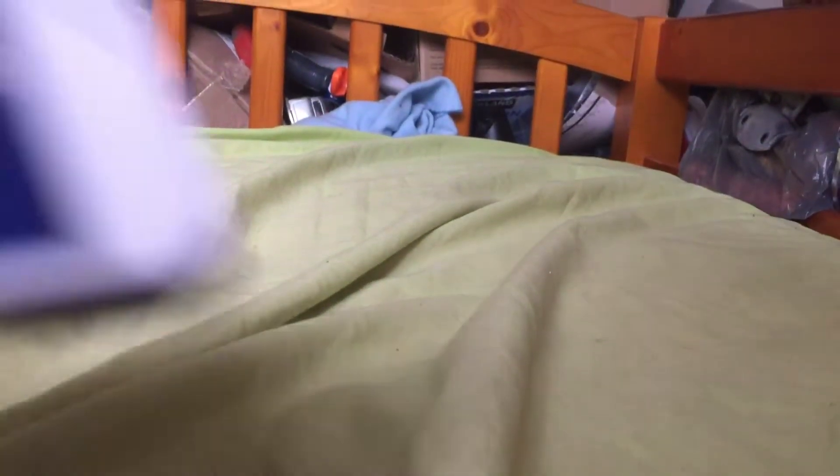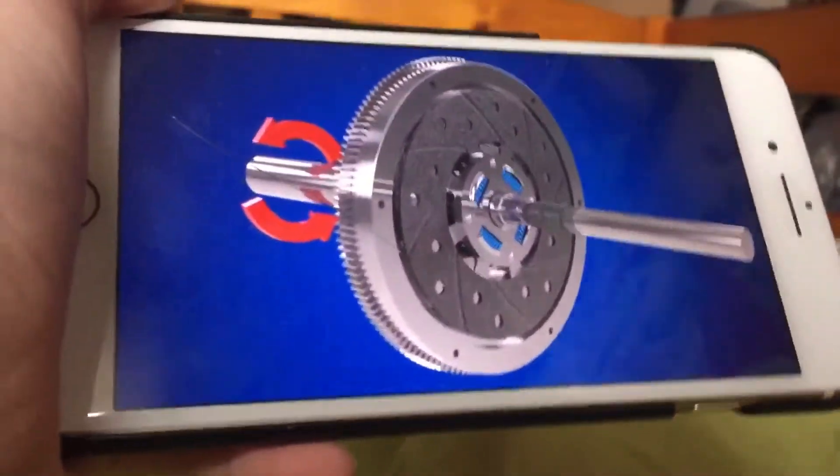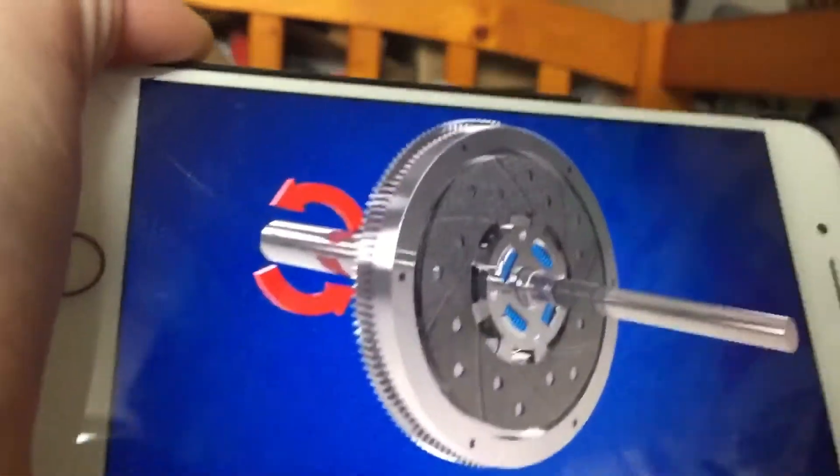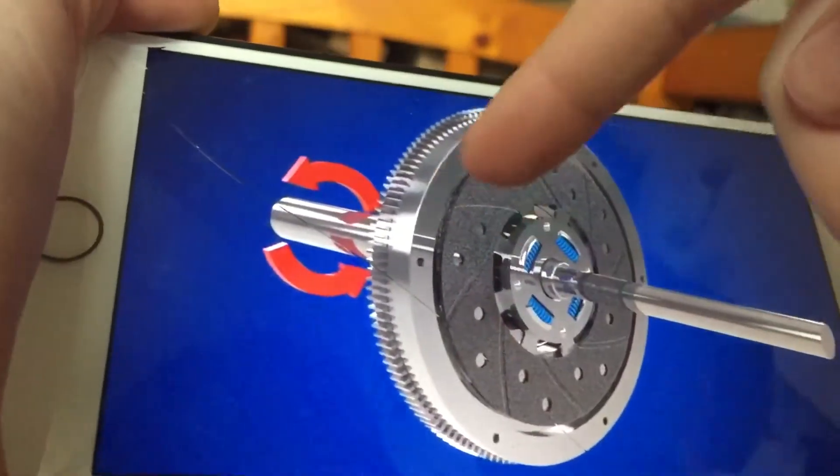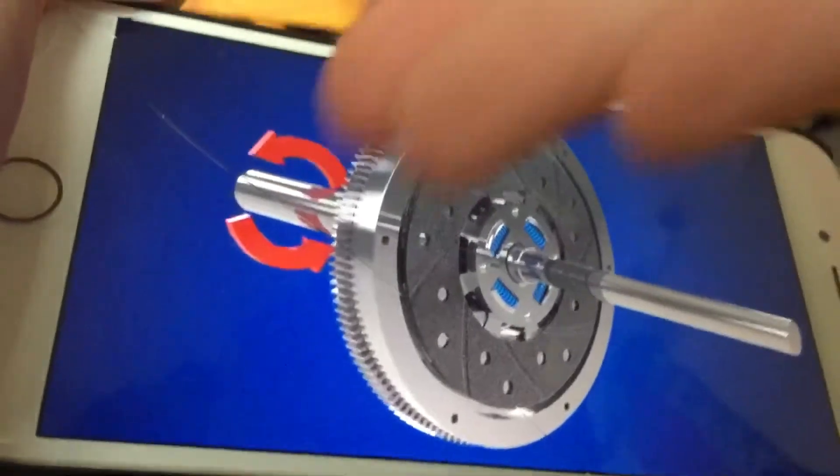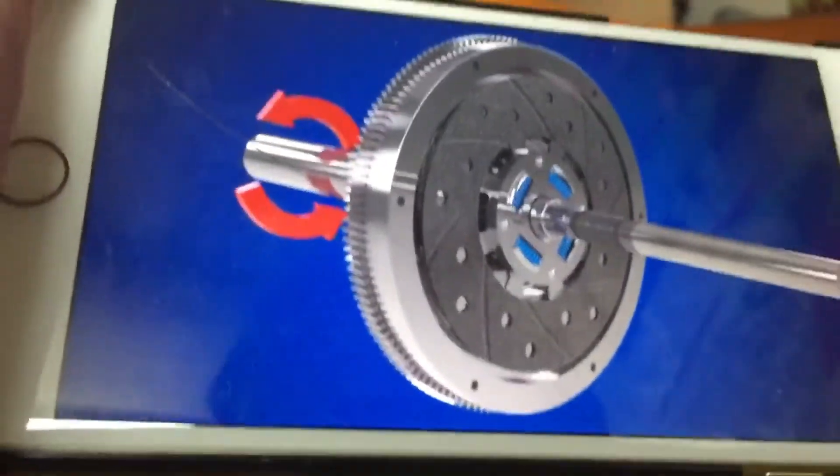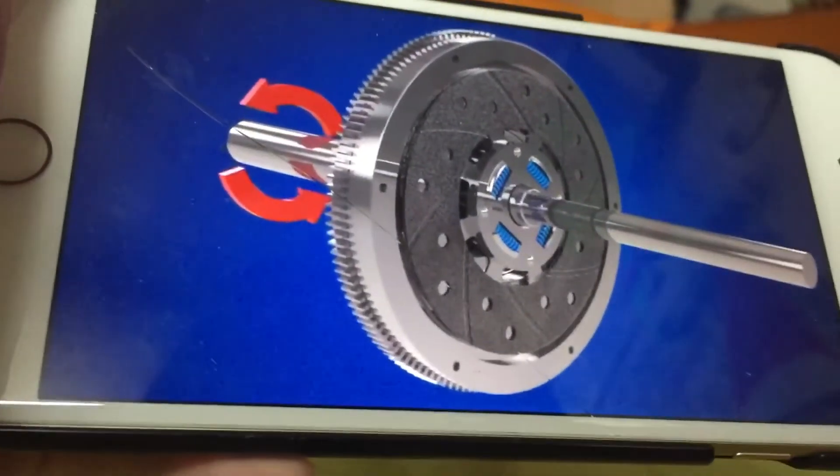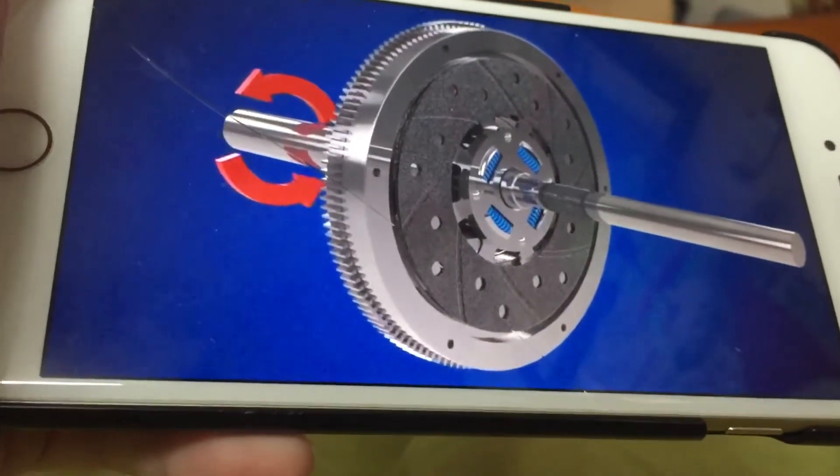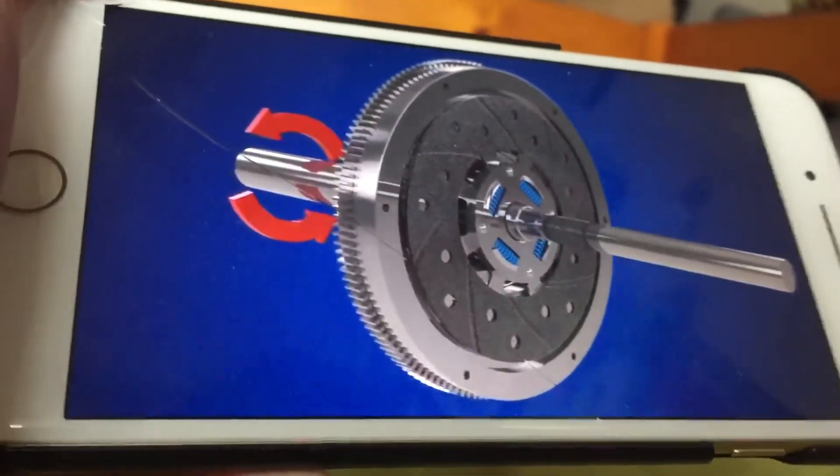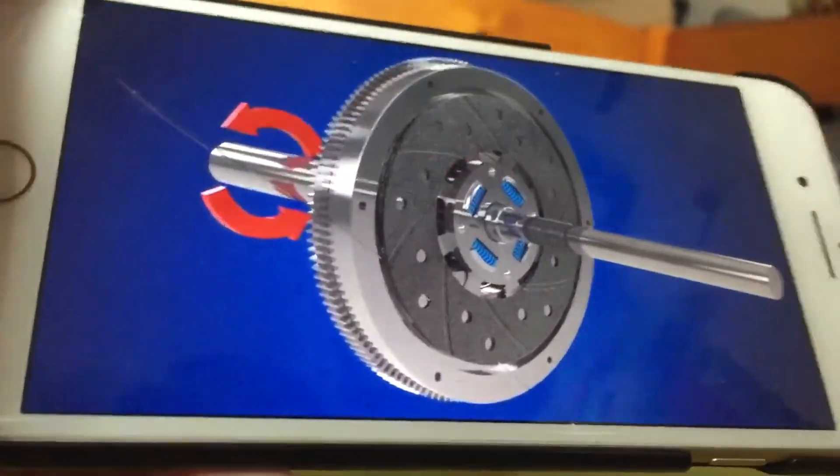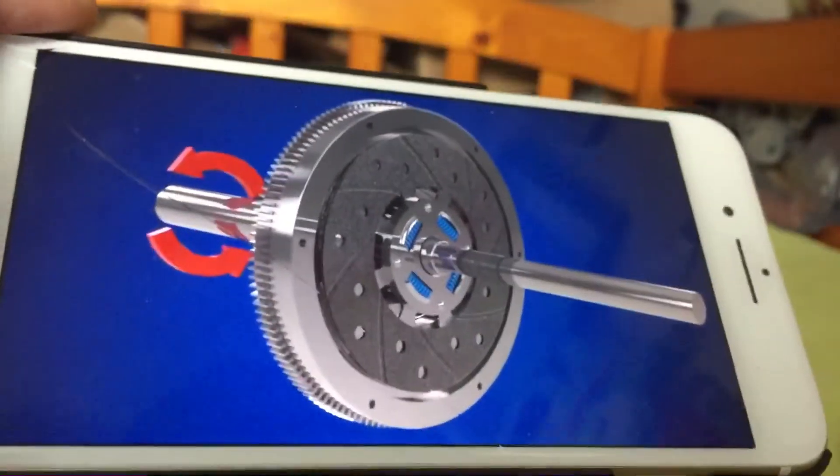When you don't push the clutch, the material, the ring around it, would go against the flywheel. That's how it doesn't disengage, because the friction would push against the flywheel so they both spin at the same time.